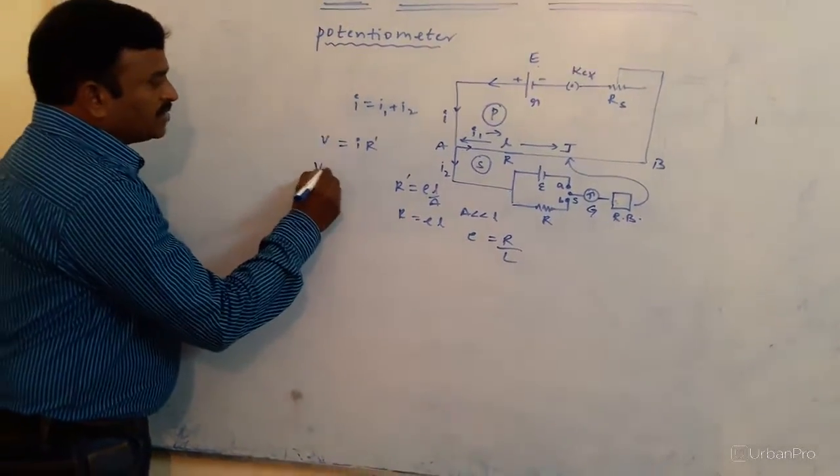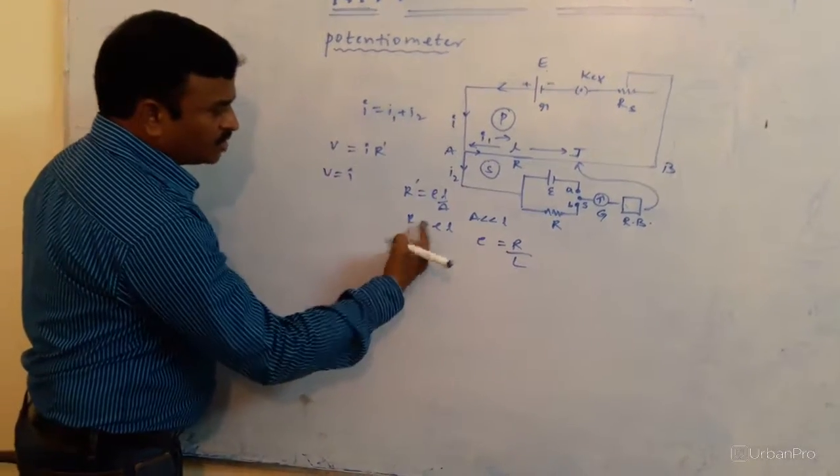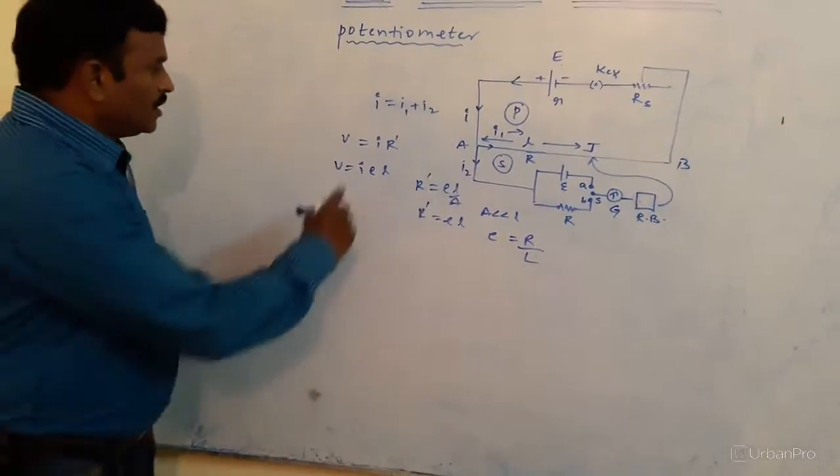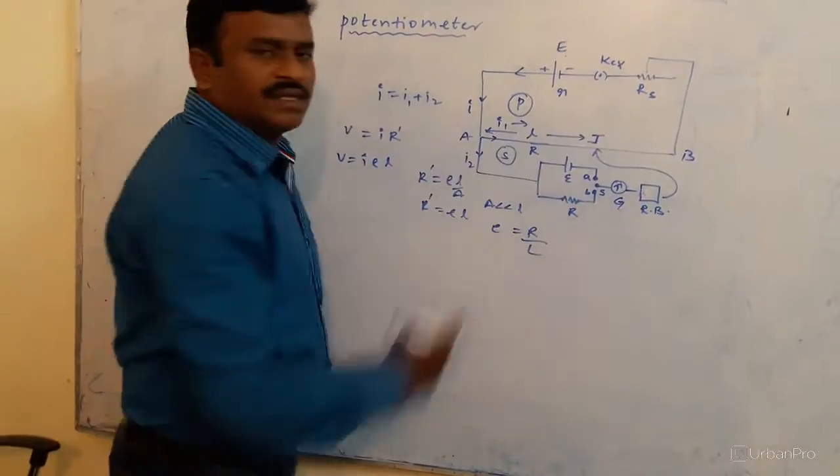Now, V is equal to I into, in place of R dash, what we can write ρ into L. This is the potential drop across the manganin wire.